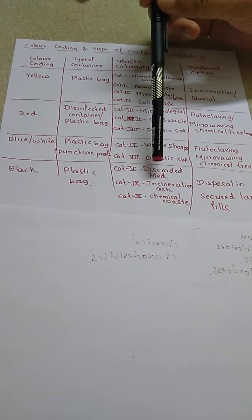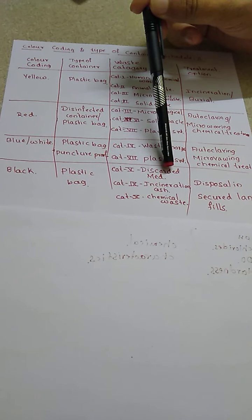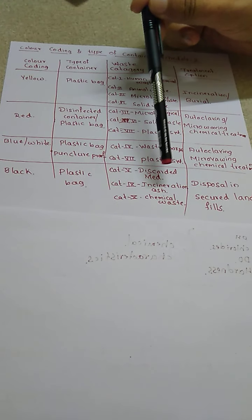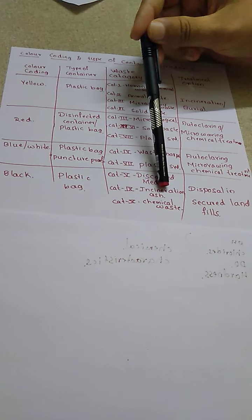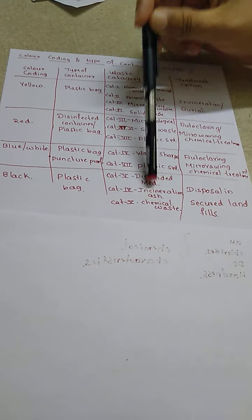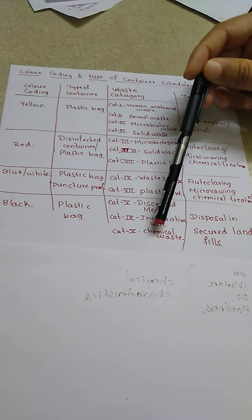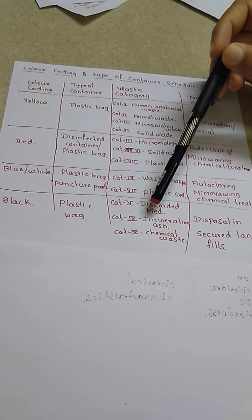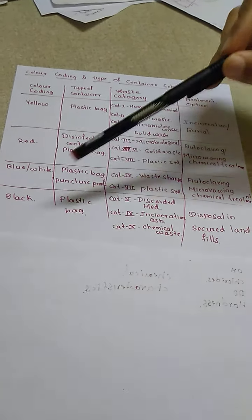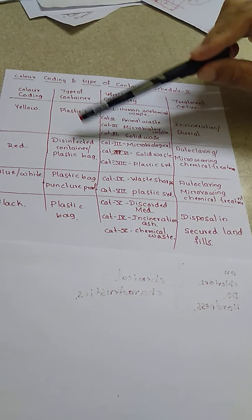Black containers are used for categories 5, 9, and 10. Category 5 has discarded medicines — expired or waste medicines. Category 9 has incineration ash — whatever ash remains after burning biomedical waste. Category 10 has chemical waste such as chemicals used in laboratories, disinfectants, and insecticides. Overall, categories 5, 9, and 10 — discarded medicines, ashes, and chemical waste — are stored in black containers. This is how we segregate different types of waste into different color-coded containers according to their various categories.